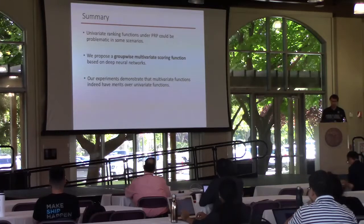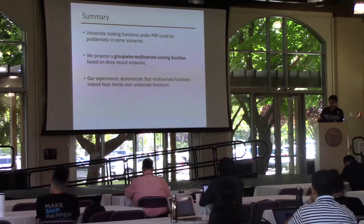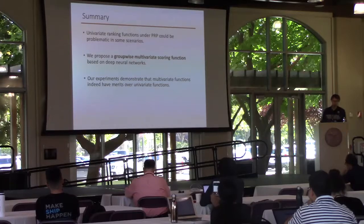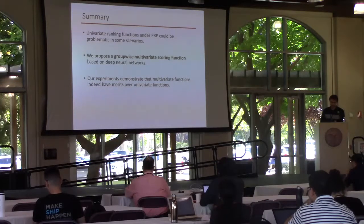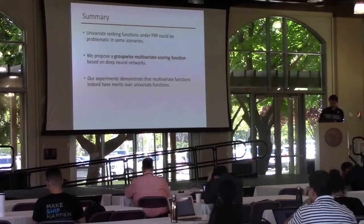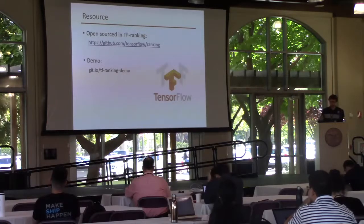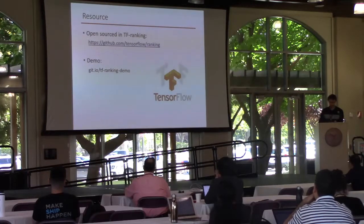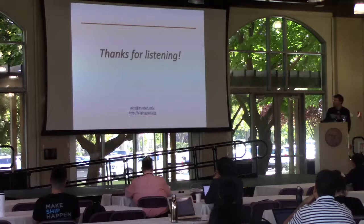Finally, as a summary: in this paper, we showed that univariate scoring functions under the probability ranking principle can be problematic for learning to rank in some scenarios. Based on our observations, we propose a group-wise multivariate scoring function that takes multiple documents as input and scores them together. Our experiments demonstrate that multivariate functions indeed have merit over univariate functions. Our model is open source in the official TF-Ranking package, and you can find a demo from the provided URL. Thank you for listening.